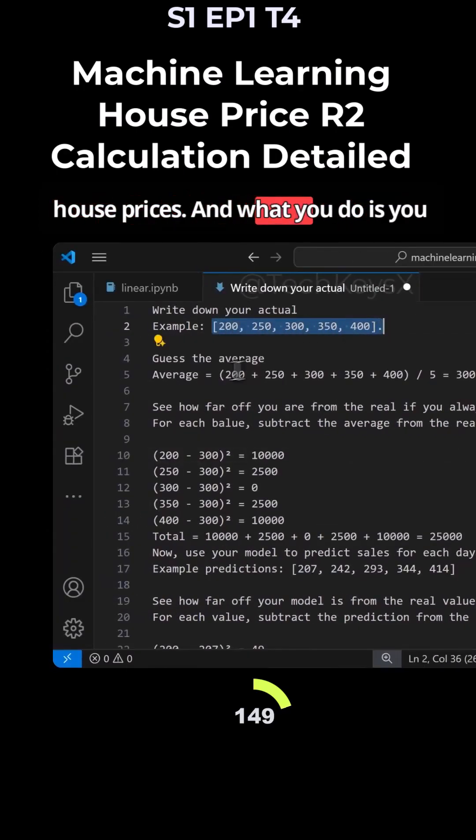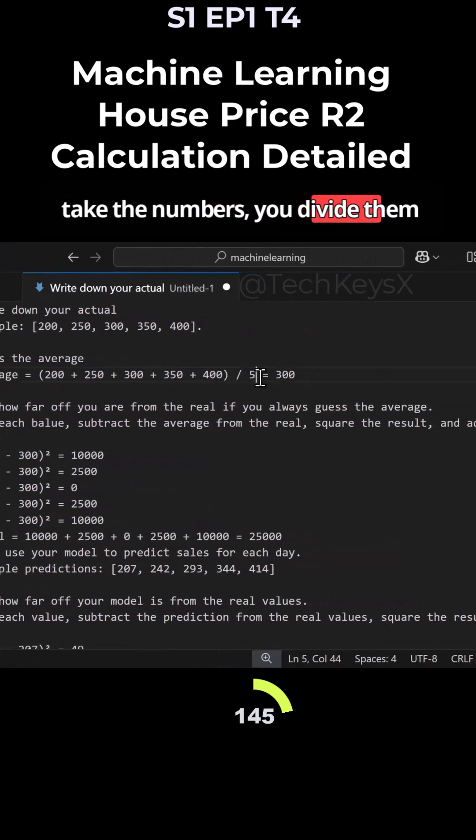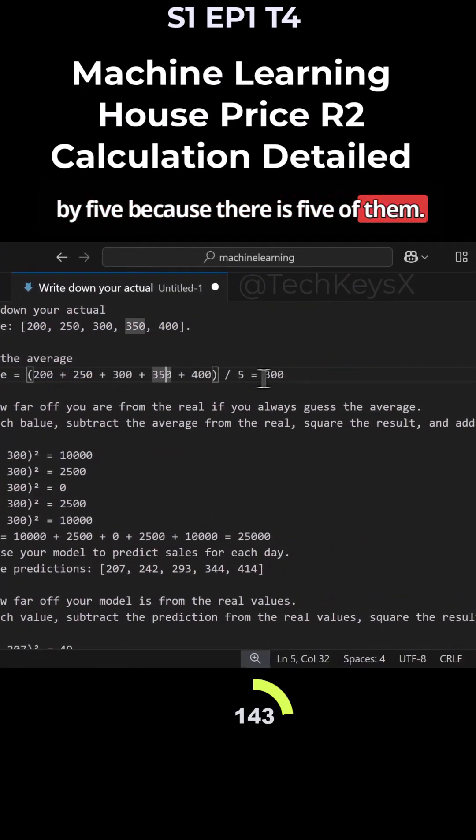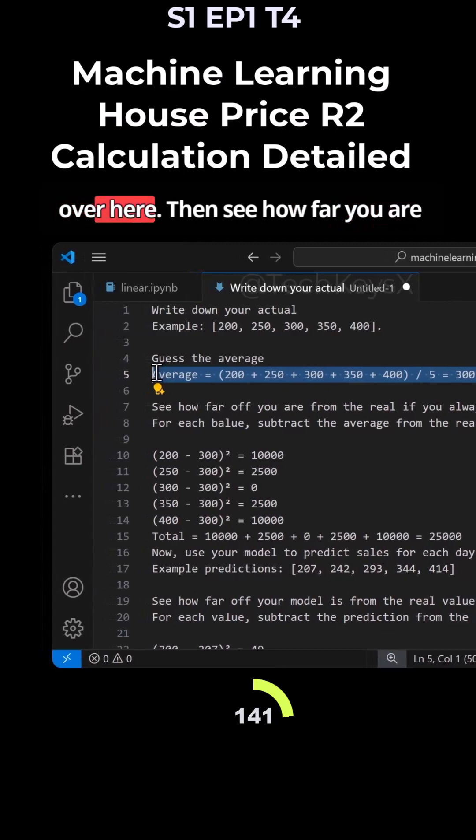These are your actual house prices. What you do is you guess the average. So you take the numbers, you divide them by five because there are five of them, and this is the output that you get over here.